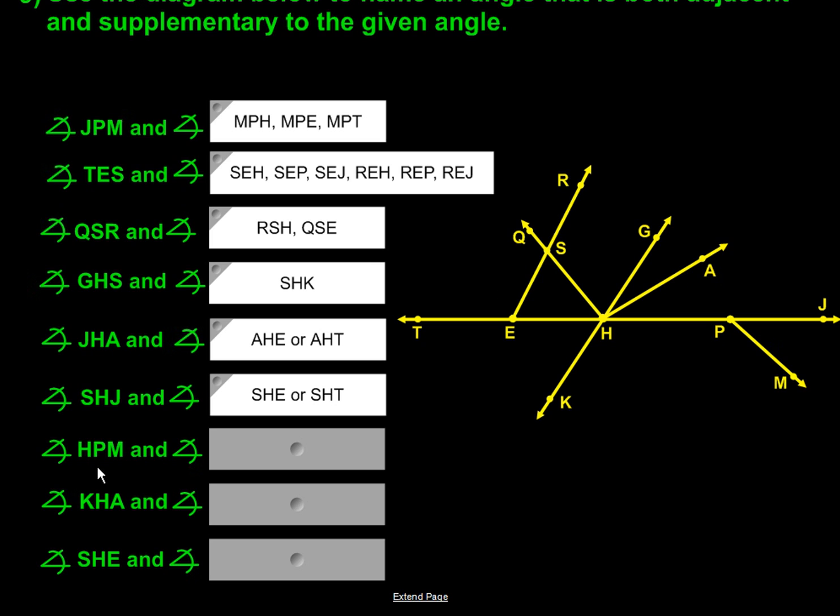Then we have HPM. Connected with MPJ. And that would make 180 degrees between this angle right here and this angle right here.